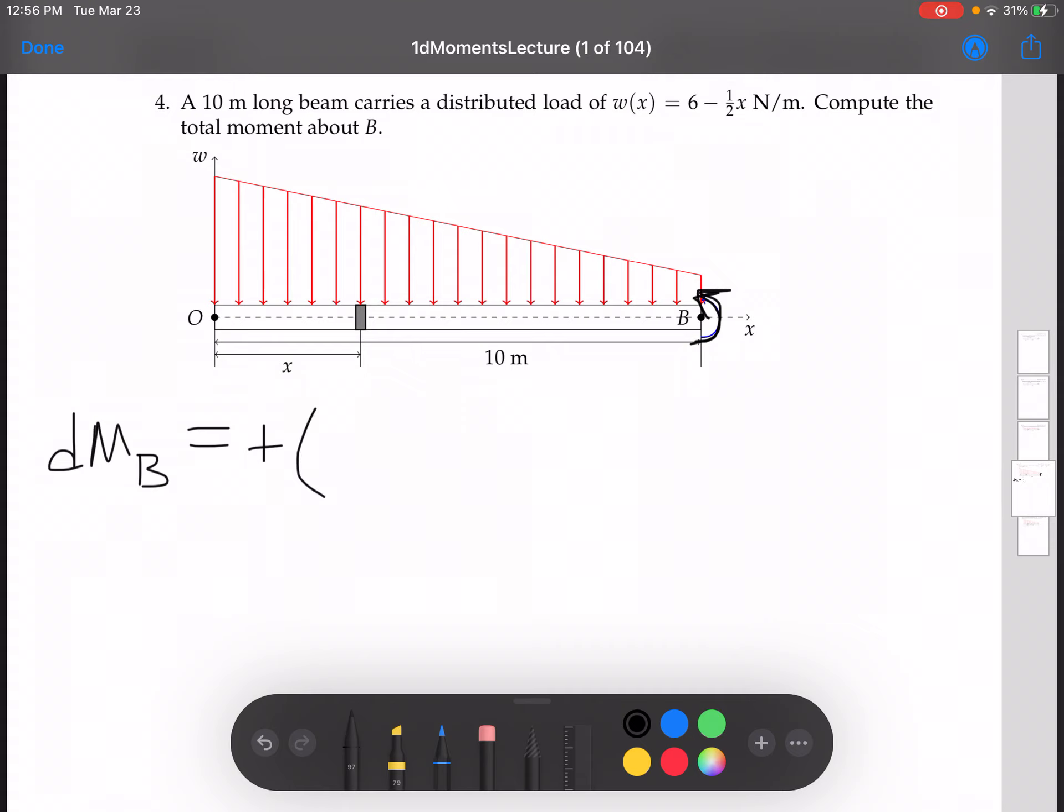The distance from the slice to the pivot, that's 10 minus X, and our force is 6 minus 1 half X, and since we're only using one dimension, just the DX.